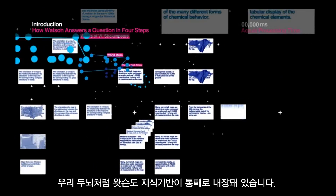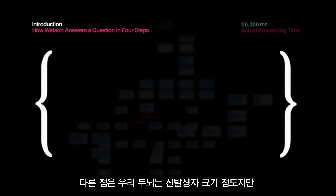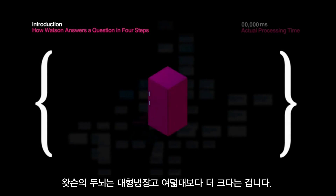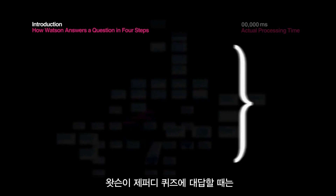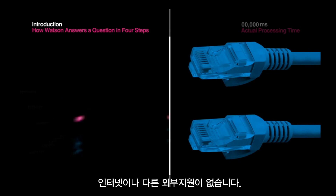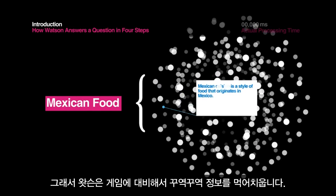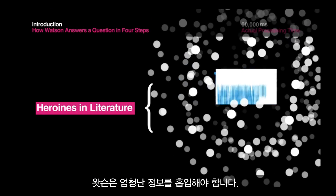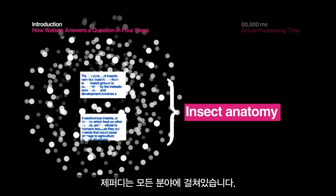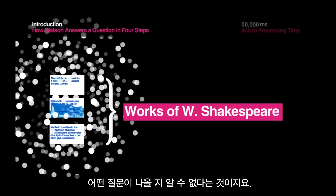Like our brains, Watson's knowledge base is entirely self-contained. Except while our brains fit in a shoebox, Watson's brain takes up more space than eight large refrigerators. When Watson answers a Jeopardy! question, there is no internet or helpline, so Watson consumes a steady diet of information to prepare for a game. Watson needs to absorb so much information because Jeopardy! is open domain, which means it can ask a question about anything.